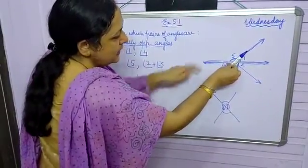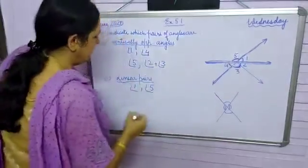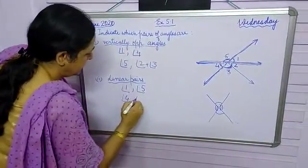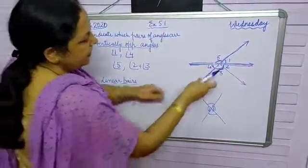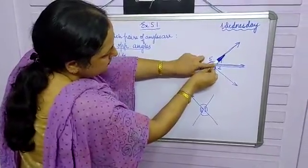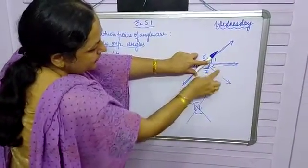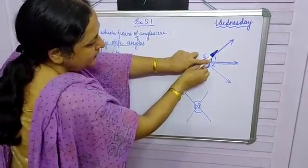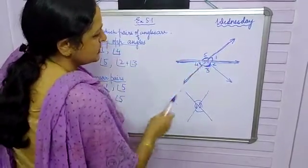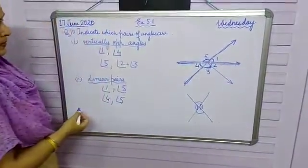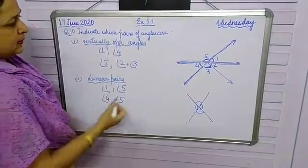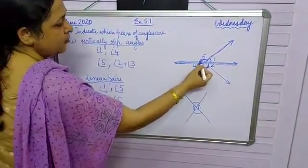If I consider this line, what about this? Angle 4 and angle 5, they are forming a linear pair. If I consider this line, then there are three angles. And in linear pair, there should be two adjacent angles. So no, so we have two pairs which are forming a linear pair. One is angle 1 and angle 5.